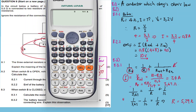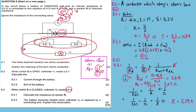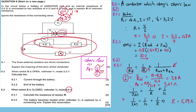Question 8.3.1 — the last question: The battery becomes heated when voltmeter 2 is replaced by a conducting wire. Explain this observation. When a conducting wire is placed across the battery terminals, a short circuit occurs.